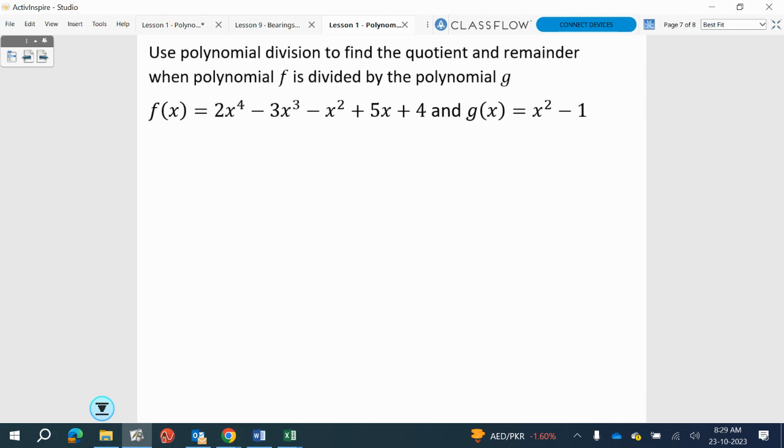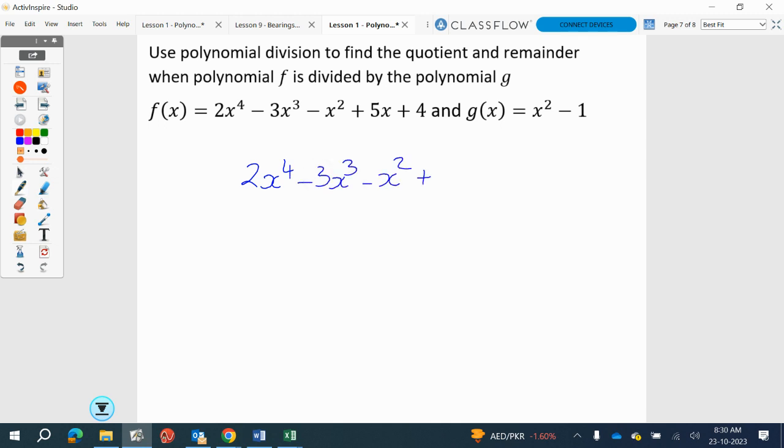So we need 2x to the 4 minus 3x cubed minus x squared plus 5x plus 4. This is our dividend, this is our divisor.